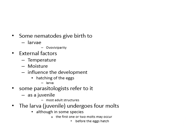Some nematodes give birth to larvae, or have ovoviviparity. External factors such as temperature and moisture influence the development and hatching of eggs into larvae. Parasitologists refer to juvenile nematode larvae as juveniles. Most adult structures undergo four molts, although in some species the first one or two molts may occur before the egg hatches.